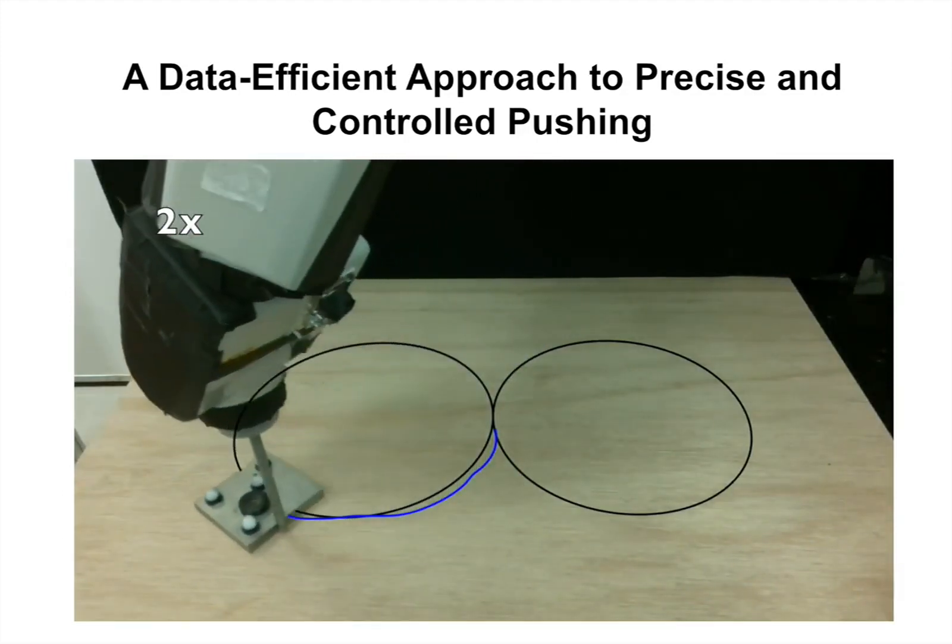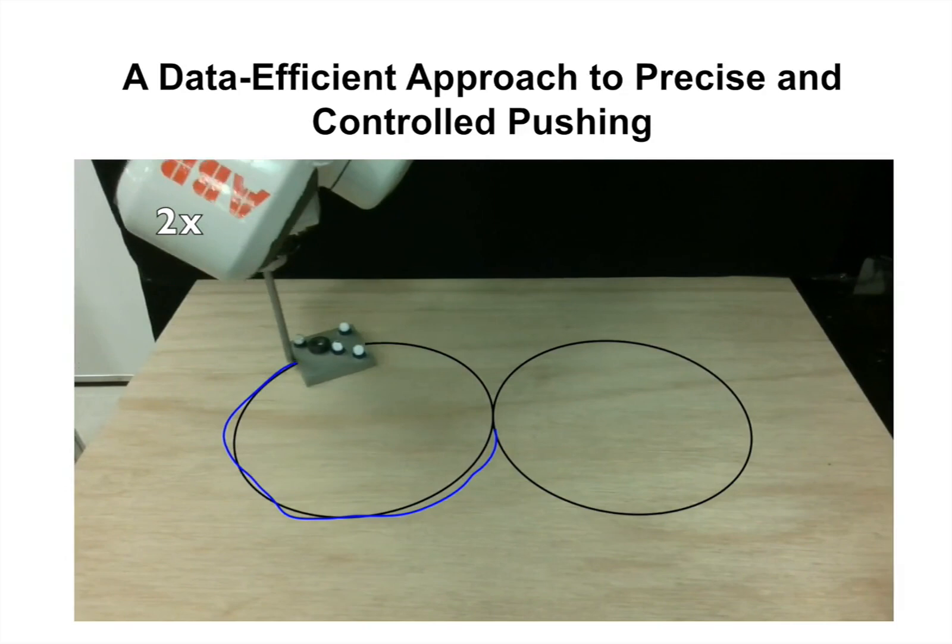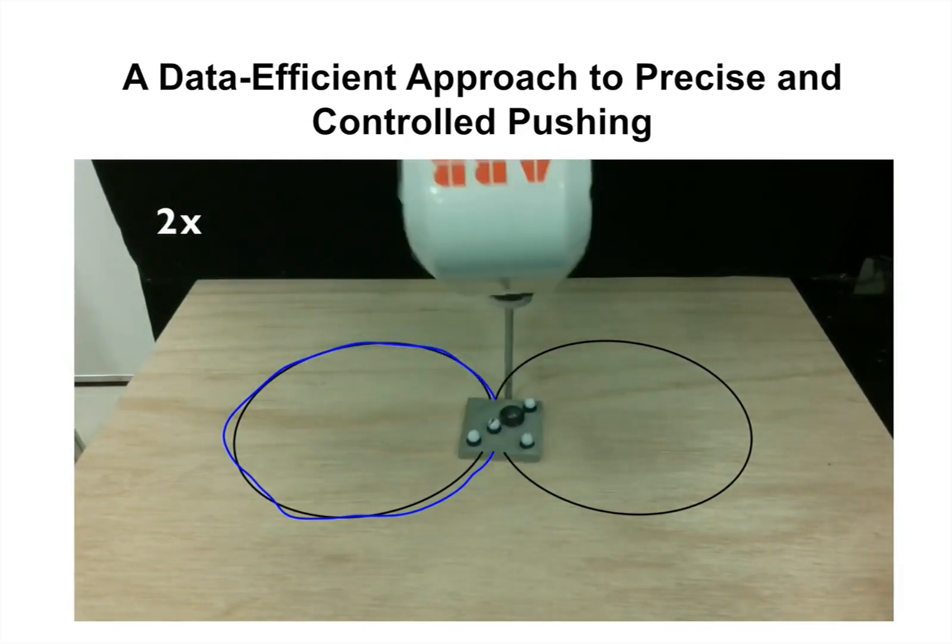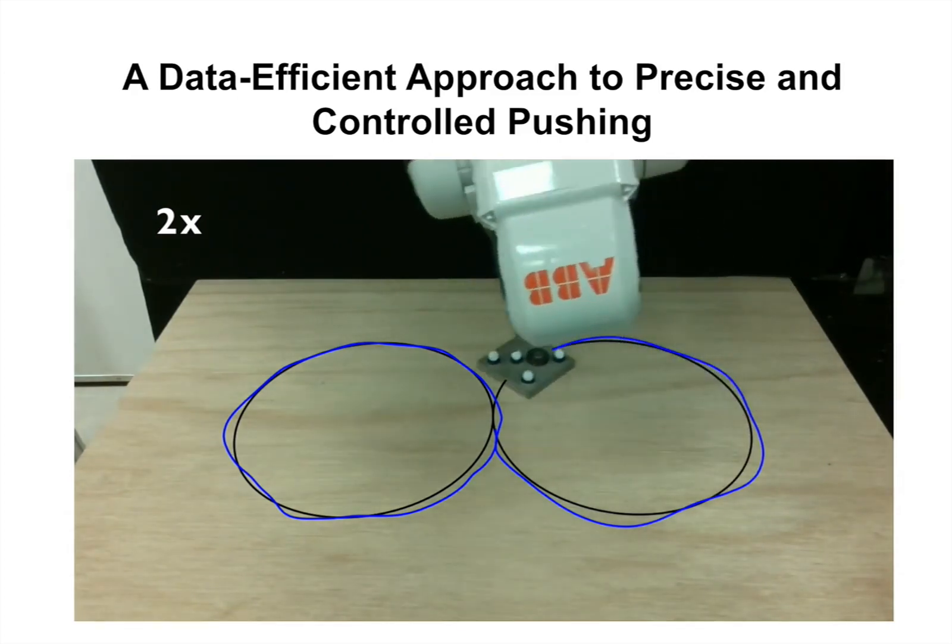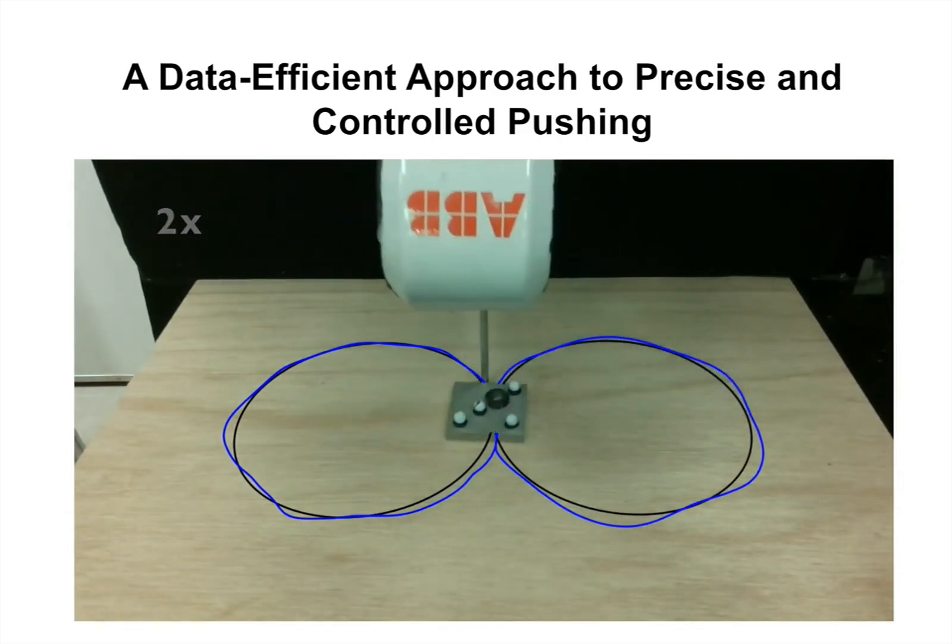This paper presents a data-driven approach to solve the task of tracking a desired trajectory using a robotic pusher. In this video, the black curve represents the desired trajectory, while the blue curve represents the position at the object's center.